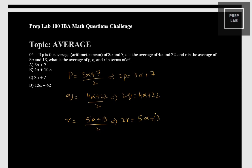Now they are asking what is the average of p, q, r in terms of alpha. We add the equations: 2p + 2q + 2r. On the left side: 3 alpha + 4 alpha + 5 alpha = 12 alpha. On the right side: 7 + 22 + 13 = 42. So 2(p + q + r) = 12 alpha + 42.